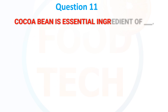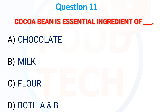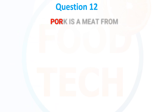Cocoa bean is an essential ingredient of: A) Chocolate, B) Milk, C) Flour, D) Both A and B. The answer is A) Chocolate.